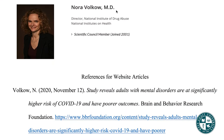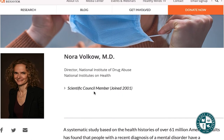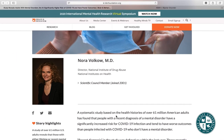I start always with the last name, so I'm writing Volkow, then a comma, then the first initial — just N with a period. If there had been a middle name, I would also include an initial for that. After that, I need the date, which goes in parentheses. I'm looking for the publication date of this article. I see a date that says 'scientific council member joined 2001,' but that's when the author joined the council, not when the article was published. So I need to scroll around and look for a date.